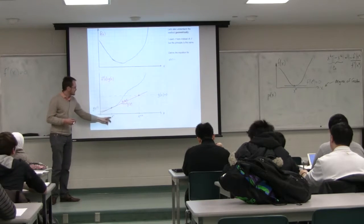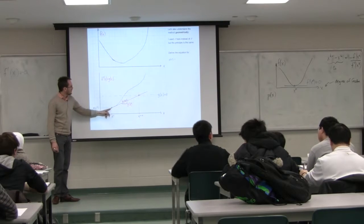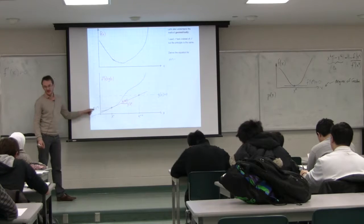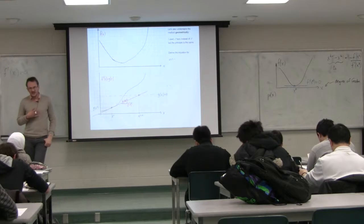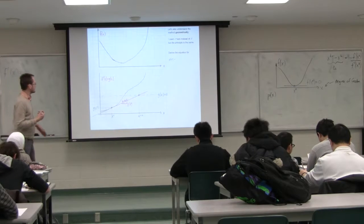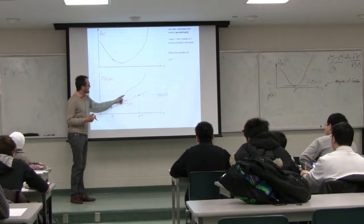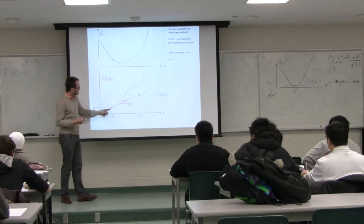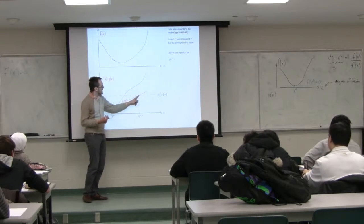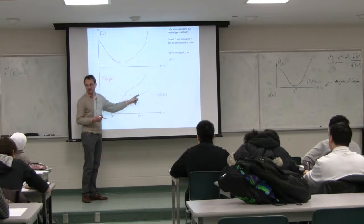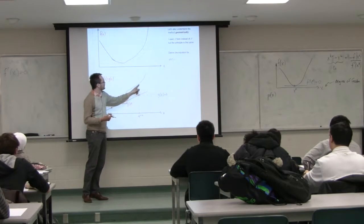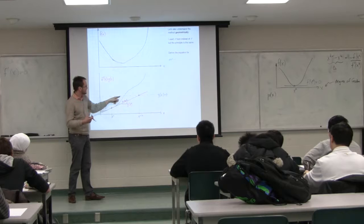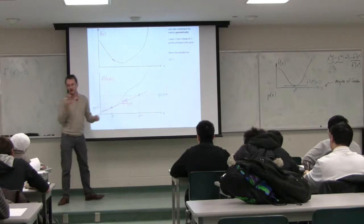If I'm at my current iteration x_n, the y value at that location on the g of x curve is g of x_n. The strategy behind Newton's method is: if you're standing at this point and want to find where it crosses zero, draw the tangent, go along the tangent, and where the tangent crosses zero — that's your next guess. Then go up there, draw another tangent, and where that tangent crosses zero is your second iteration. We'll quickly narrow in on that zero.